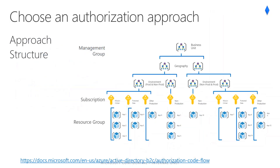Authorization is the act of granting an authenticated party permissions to do something. It specifies what data you're allowed to access and what you can do with that data. Microsoft Identity Platform implements the OAuth 2.0 protocol for handling authorization. The OAuth 2.0 authorization code flow is used to perform authentication and authorization in the majority of app types, including single page apps, web apps, and natively installed apps. The flow enables apps to securely acquire access tokens to access resources secured by the Microsoft Identity Platform endpoint, as well as refresh tokens and ID tokens for the signed-in user.